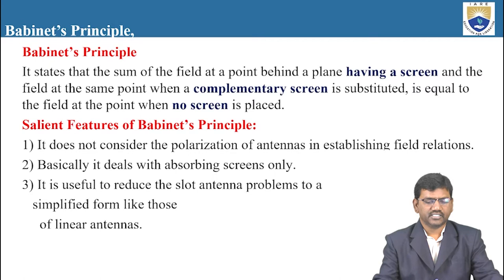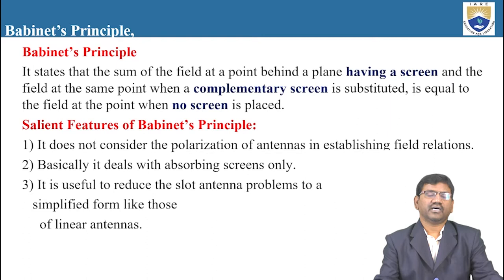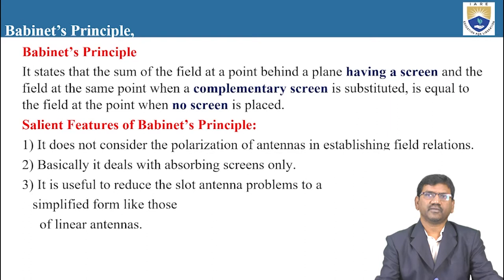The salient features of Babinet's Principle are: it does not consider the polarization of the antennas in establishing the field relations — that means it will not consider whether the antenna is vertically or horizontally polarized. Only the field of the radiating antennas is considered here. It deals with absorbing screens only and is useful to reduce slot antenna problems to a simplified form like those of linear antennas.